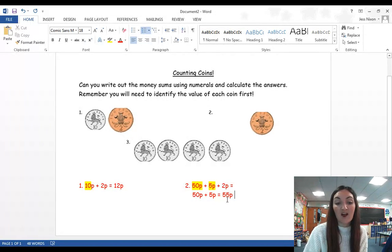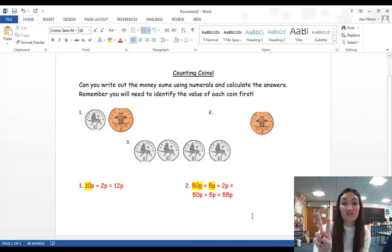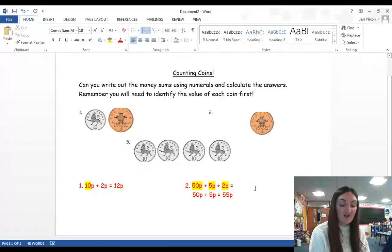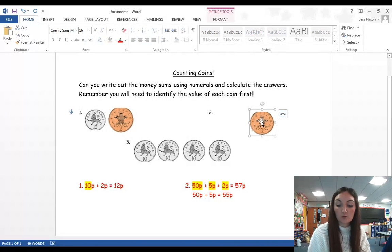Then what I could do, I know that 50 and 5 pence is 55 pence. I've got 2 pence left to add, so 55 in my head and count on 56, 57 pence. So, now I've added that one too. And I can write 57 pence. You must remember to put your pence.